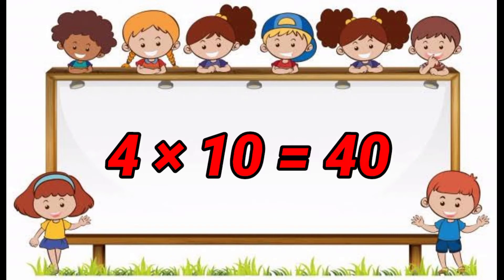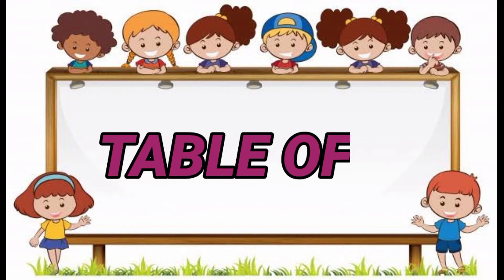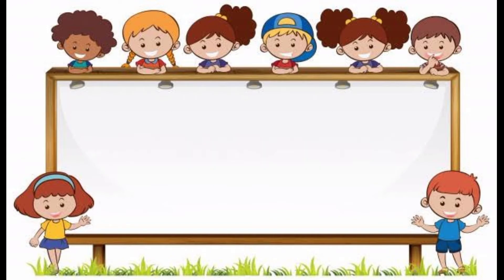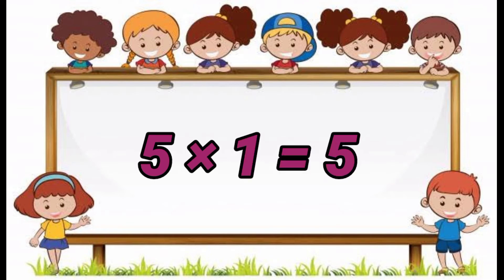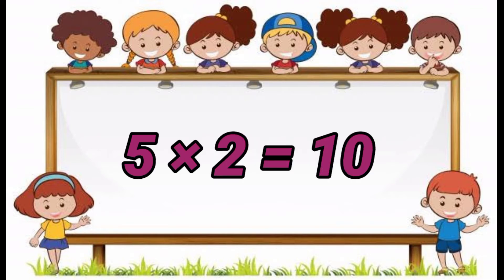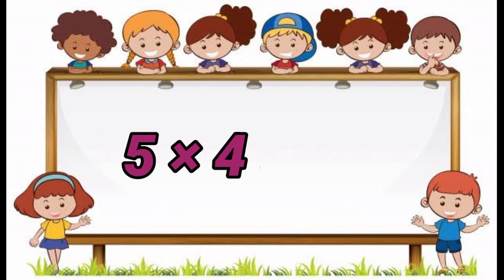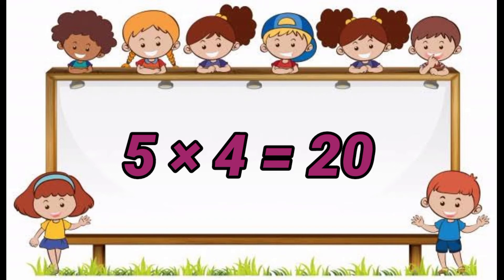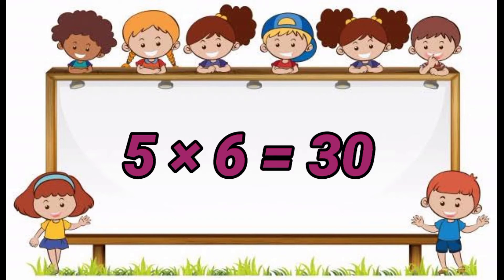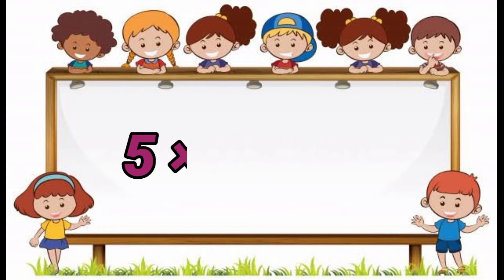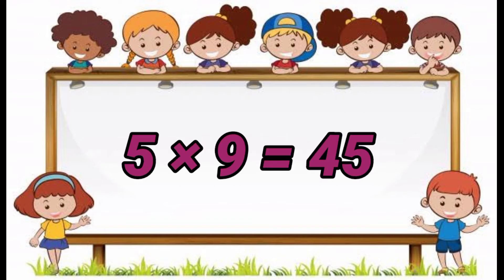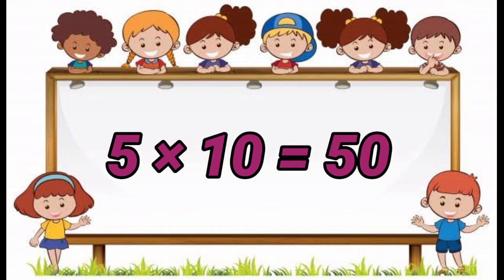4 10's are 40. Table of 5. 5 5's are 24. 5 6's are 30. 5 7's are 34. 5 8's are 40. 5 9's are 45. 5 10's are 50.